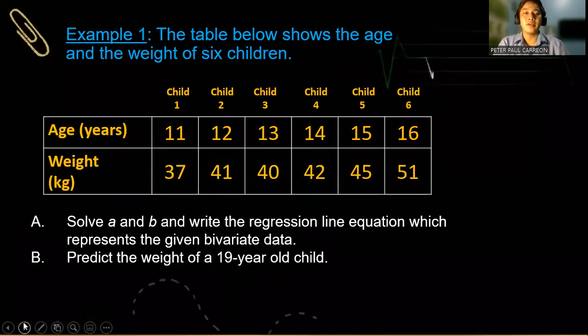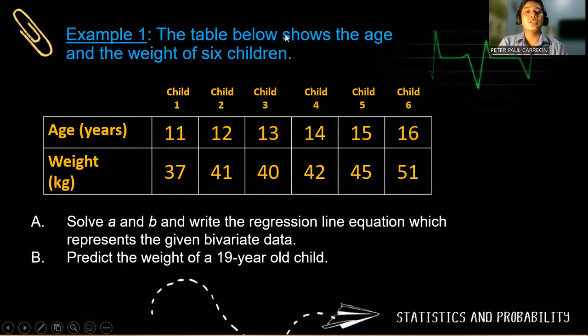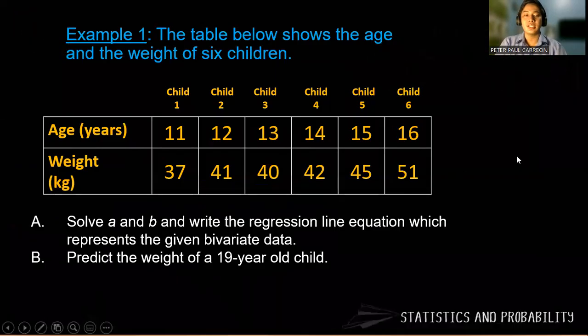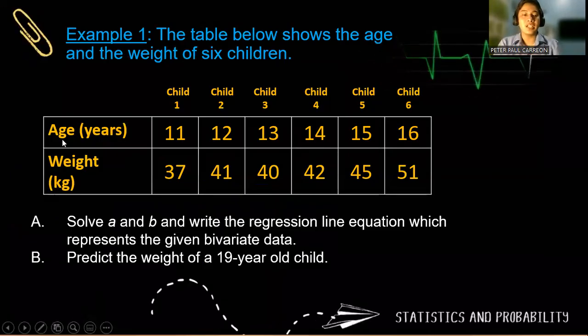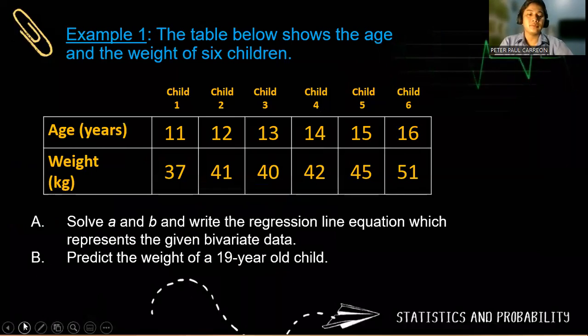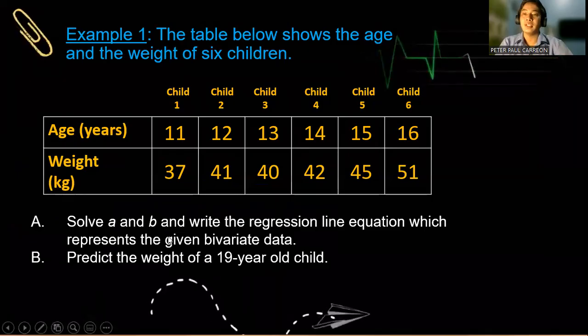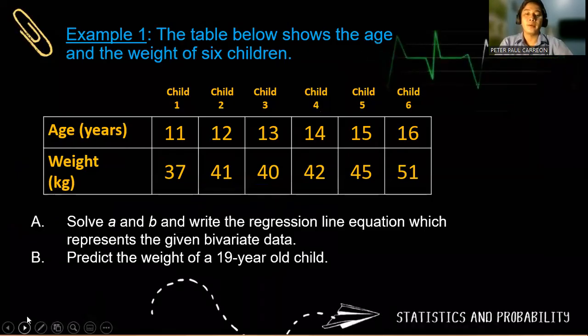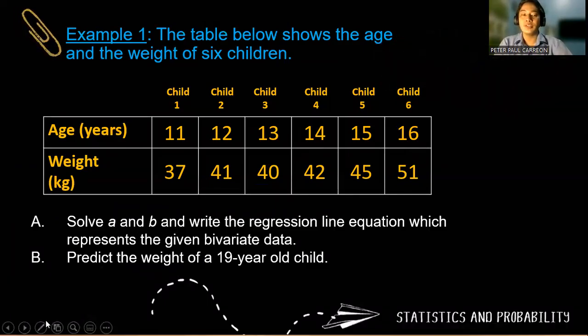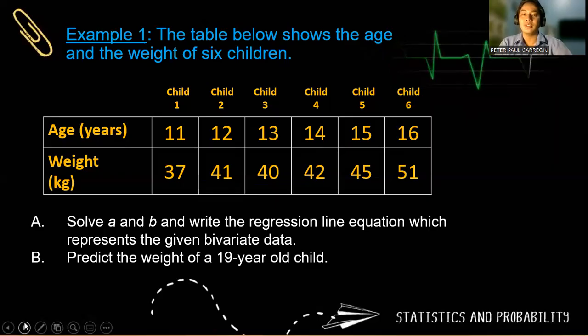So let's have a practical example. Going back to the table that shows the age and the weight of our six children, obviously our n is six. So let's predict the weight of a 19-year-old child. And of course, we will also solve for a and b, in which we form this a and b so that we could form the regression equation.